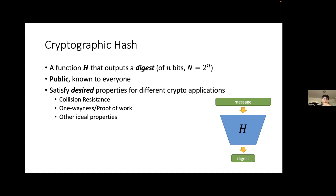A good hash function needs to satisfy some desired properties for different applications. For example, the most basic property is collision resistance. You may also use a hash function as a one-way function, or you want it to satisfy properties like proof of work, or use it for cryptographic transformations like Fiat-Shamir.